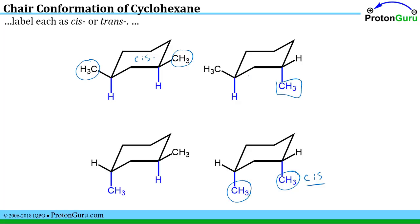If you have one down and one up, that's by definition a trans isomer. One down, one up, this one would be trans as well. So now we've identified the cis and trans isomer.